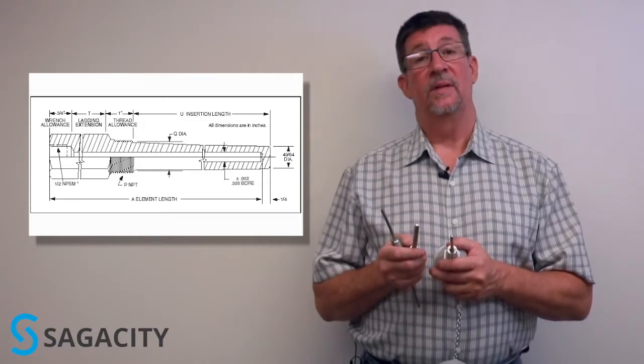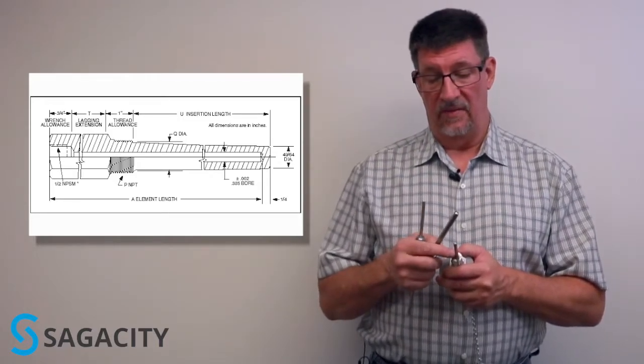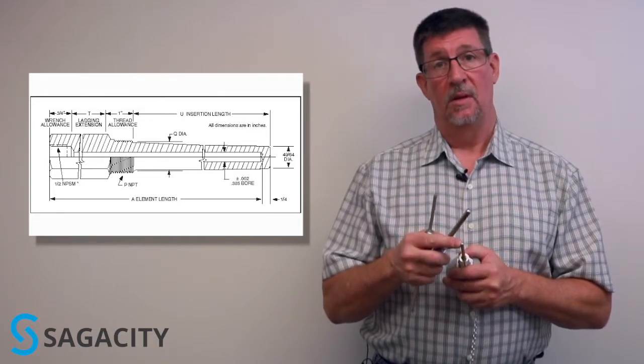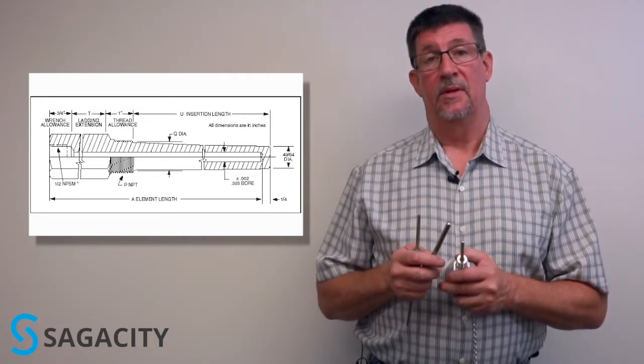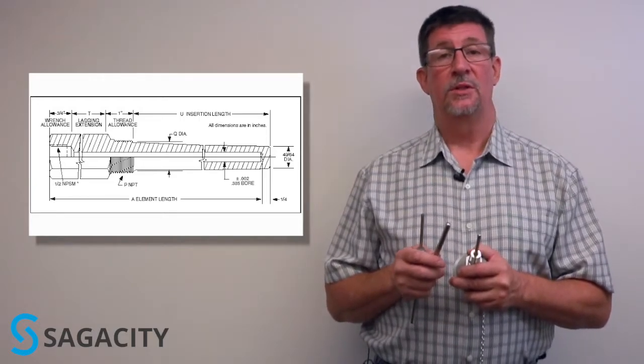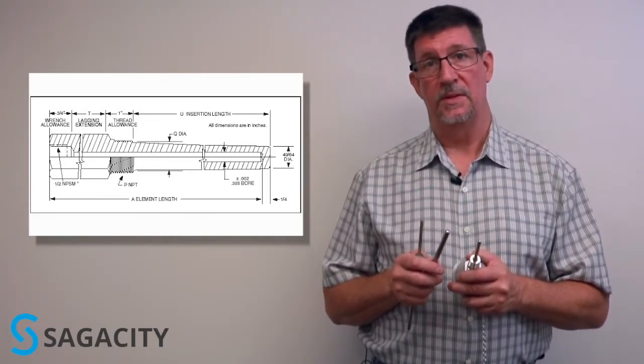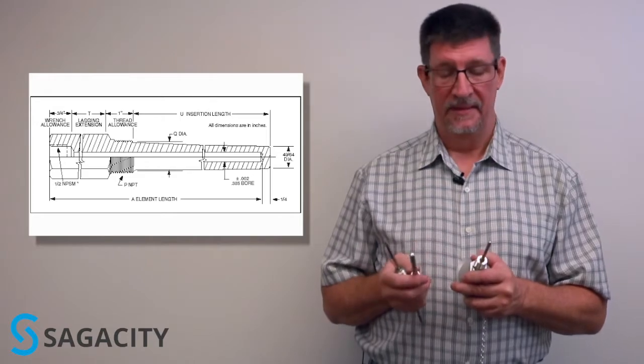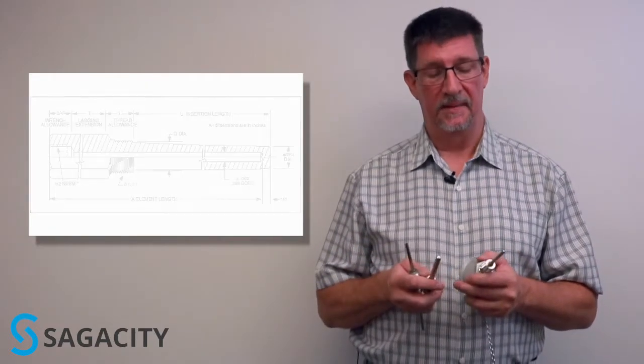You'll notice these have two different diameters. You can have typically a quarter inch diameter or a 0.375 diameter. Again that's going to be determined by the size of your protection tube and what you're trying to accomplish with your piping goals and safety goals for the device and how that's going to be interfaced with your existing piping scheme.